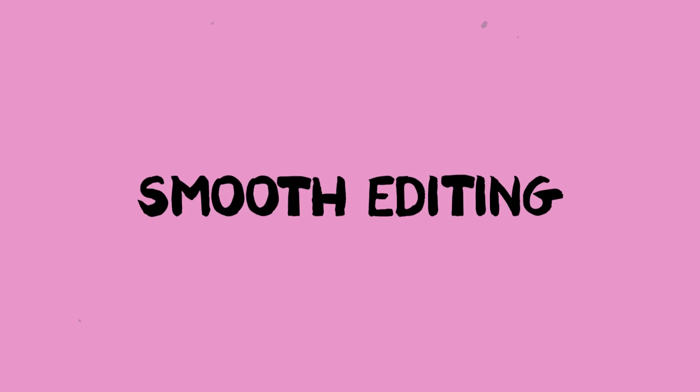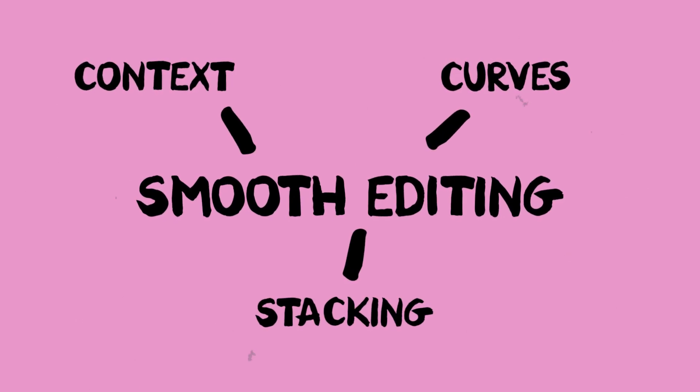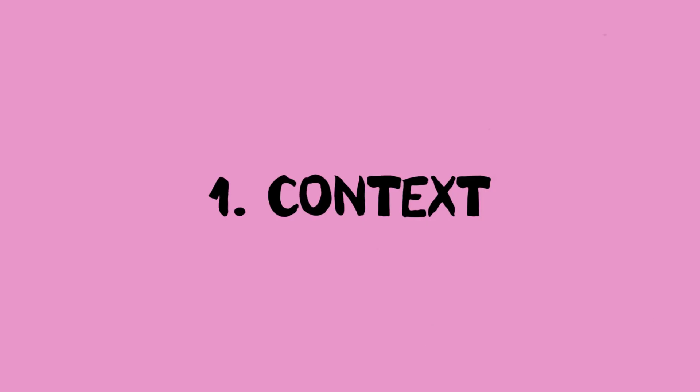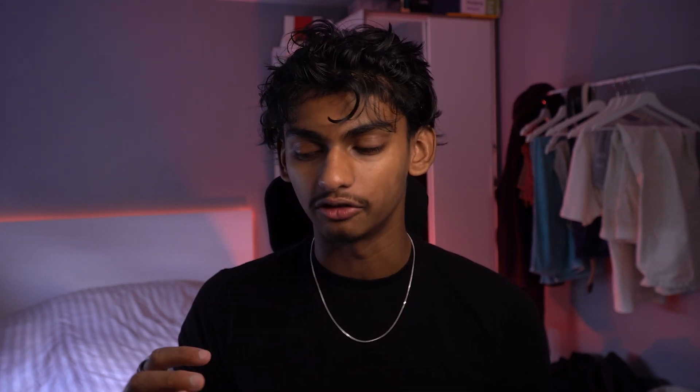You've got three components of smooth editing: context, curves, and stacking. The first stage is figuring out the context of your movement. When you break down a smooth edit, you can break it into separate movements — generally something comes onto the screen, does some sort of movement, and then comes off. You can break that into three categories: entry, exit, and intermediate.